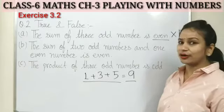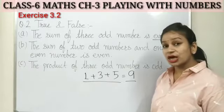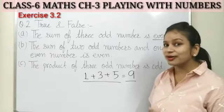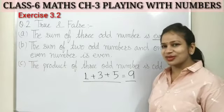If you look at this: the sum of odd numbers will always be odd. It will never be even.